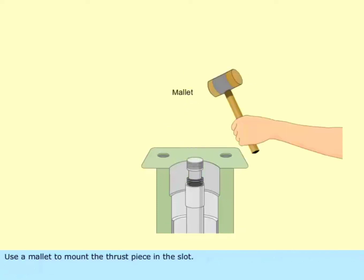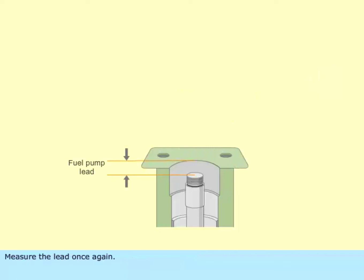Use a mallet to mount the thrust piece in the slot. Measure the lead once again. Run the engine on full load and check the combustion pressure.